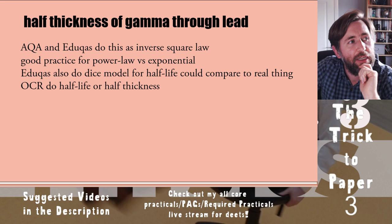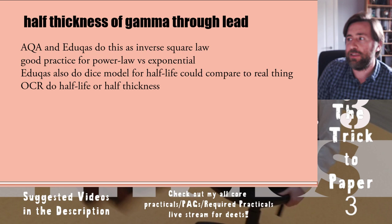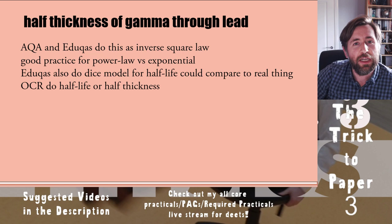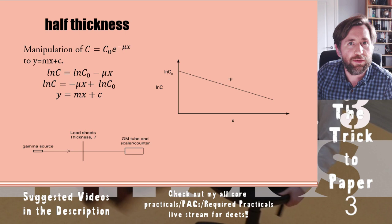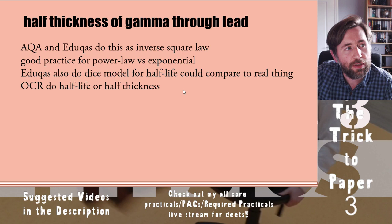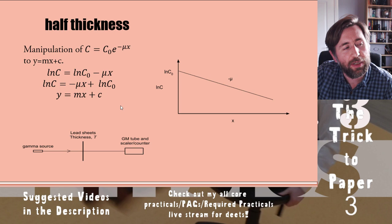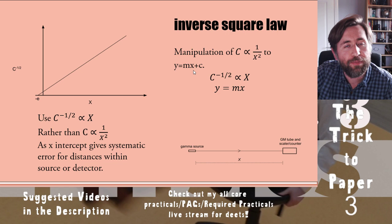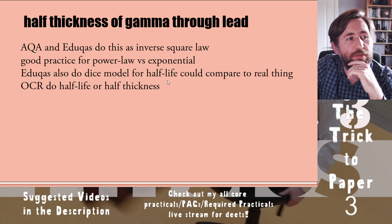Now we're talking about half-thickness of gamma through lead. That's how Edexcel does this one. All exam boards must include ionizing radiation in their core practicals, so you need to know how to use a Geiger-Müller tube accurately. Half-thickness is an exponential relationship, while the inverse square law is a power law — good practice for understanding the difference between the two.